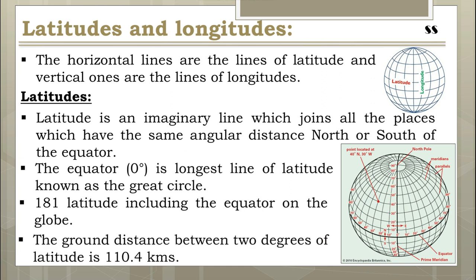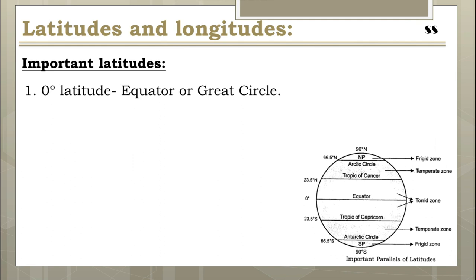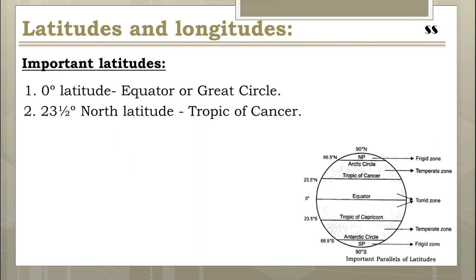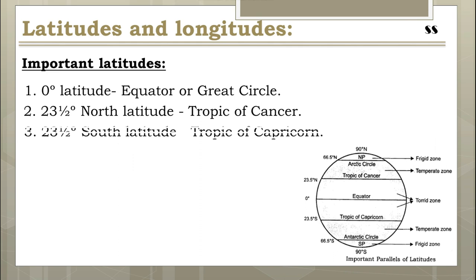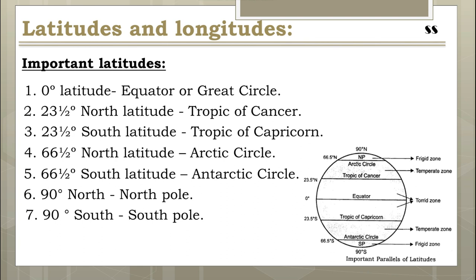The ground distance between two degrees of latitude is 110.4 kilometers. Among 181 latitudes, we consider only seven important ones. These are: zero degrees — the equator or great circle; 23.5 degrees north — the Tropic of Cancer; 23.5 degrees south — the Tropic of Capricorn; 66.5 degrees north — the Arctic Circle; 66.5 degrees south — the Antarctic Circle; 90 degrees north — the North Pole; and 90 degrees south — the South Pole.